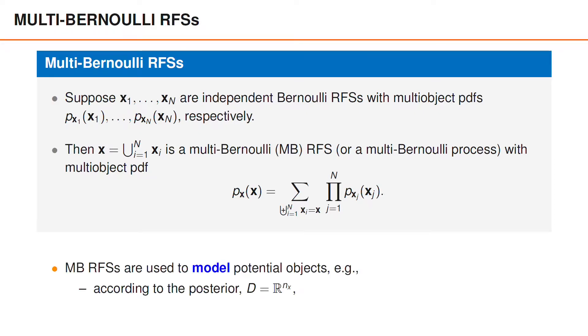Multi-Bernoulli random finite sets are often used to model multiple potential objects. Whereas a Bernoulli random finite set can be used to model the special case when we have one potential object, a multi-Bernoulli random finite set is useful in the more common situation when there may be multiple objects present. Another possible usage is to model appearing objects, that is, the set of new objects that appear during the prediction step.